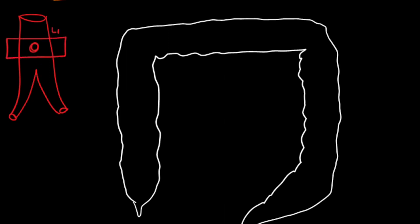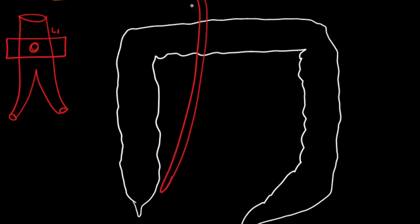Now let's have a quick summary. The superior mesenteric artery arises from the anterior wall of the abdominal aorta at the L1 vertebral level and passes to the right iliac fossa, where it anastomoses with branches of the ileocolic artery. On the right side, the inferior pancreaticoduodenal artery arises and anastomoses with the superior pancreaticoduodenal artery, which is a branch of the common hepatic artery.